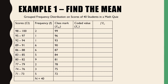Alright, let's work through this example. I'll use a different color pen this time. So we have our class intervals here — let's count them: 1, 2, 3, 4, 5, 6, 7, 8, 9, 10. So there are 10 class intervals.